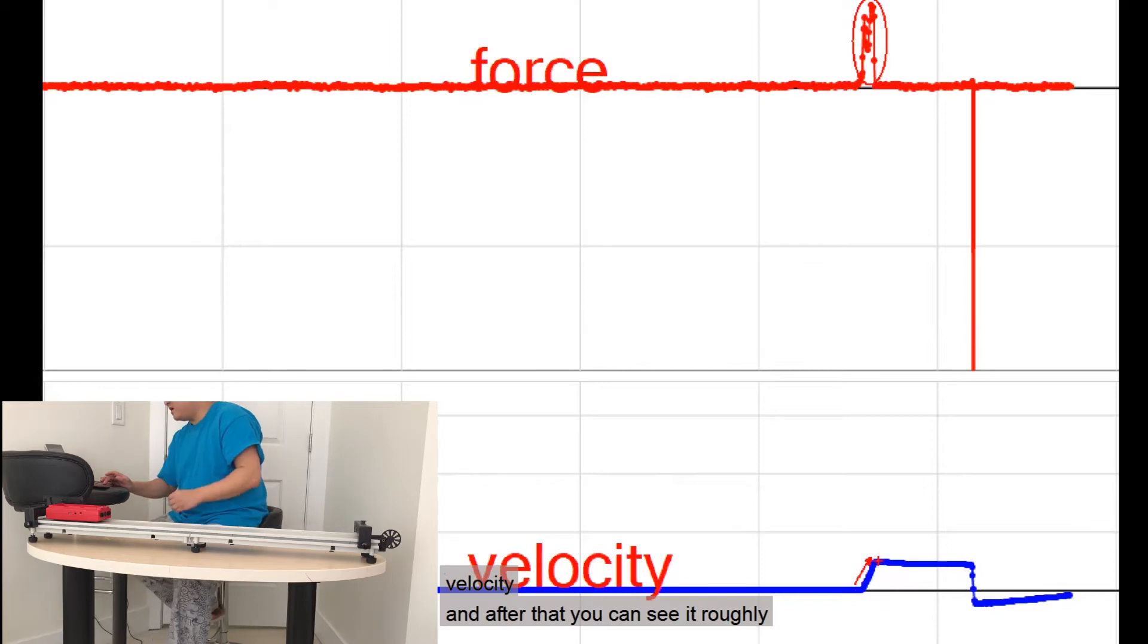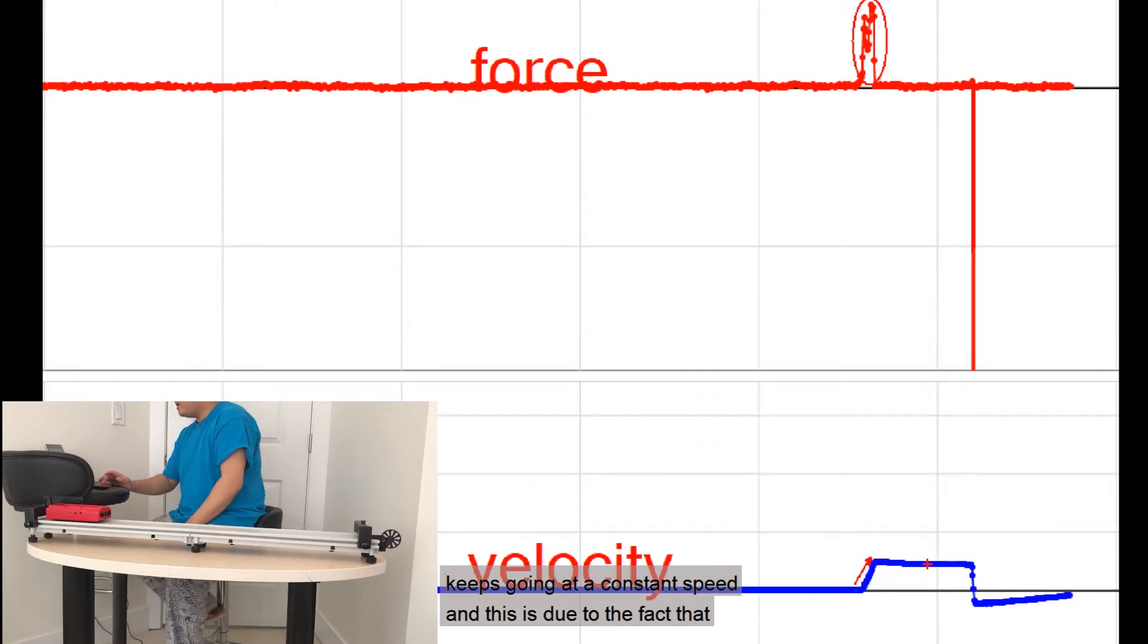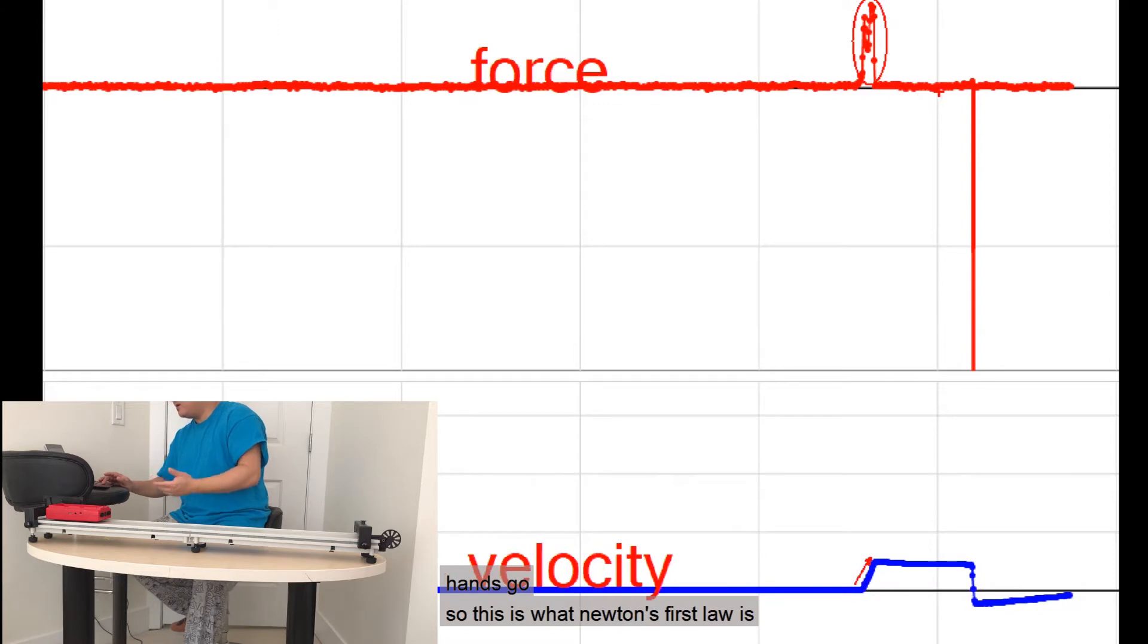And after that, you can see it roughly keeps going at a constant speed. And this is due to the fact that if you look at the force graph, the force is back to zero again because I let my hands go. So this is what Newton's first law is about. When there's external force, then you will have a change in the state of motion of the object. Otherwise, if there's zero force, then the state of motion will not change. Either remain at rest or going at a constant speed.